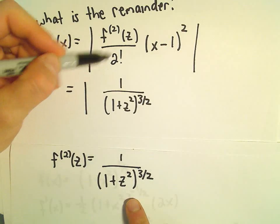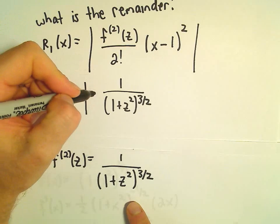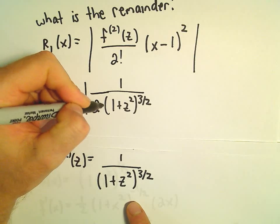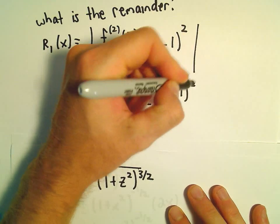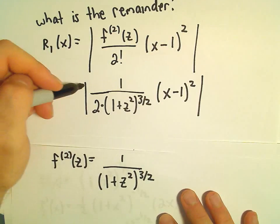We would have a 2 factorial in the denominator. So 2 factorial is just the same thing as multiplying by 2. And then we would be left with our x minus 1 squared, and now we have our expression.